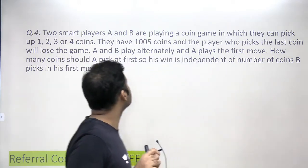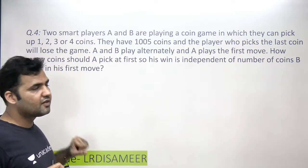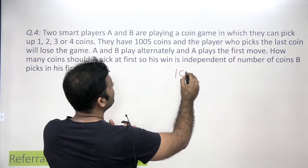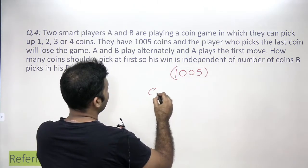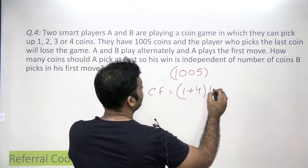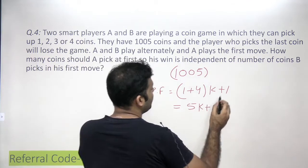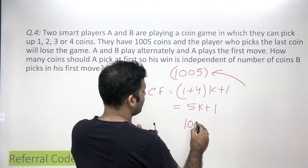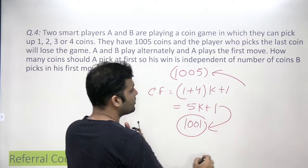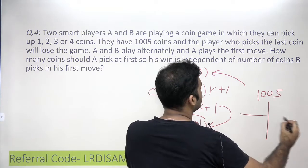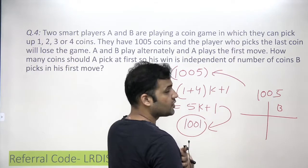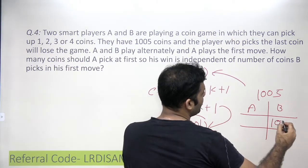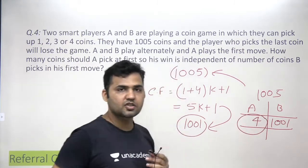This next question was given as homework in the previous video. Here the number of coins is 1005. The controlling factor is still 5k plus 1. A number which when divided by 5 gives remainder 1 near 1005 is 1001. So if A wants to leave 1001 coins for B, out of 1005 coins he should pick 4 coins. The answer is 4.